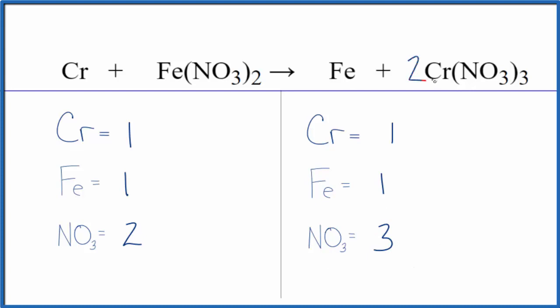If I put a 2 as my coefficient, 1 times 2, I'll have two chromium atoms. And for the nitrate here, I have this one nitrate times 3, so I have three of those times 2. Now I have six nitrates. But that's okay. I can just put a 3 in front of the iron nitrate.